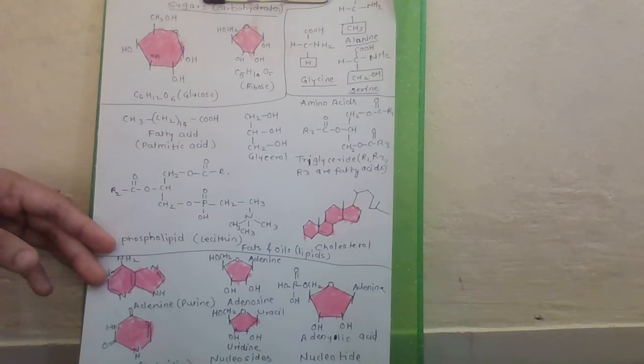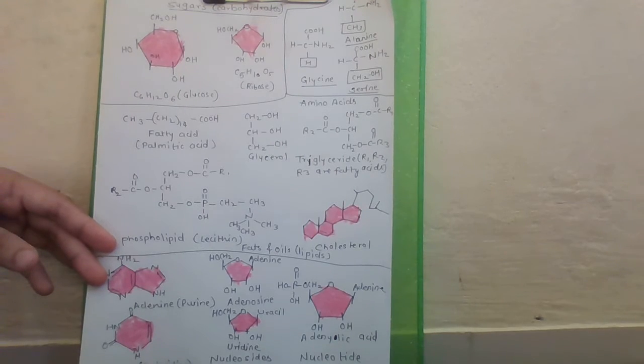They can be monoglycerides, diglycerides or triglycerides. These are called fats and oils based on their melting points. Oils have lower melting point and hence remain oil in winter.